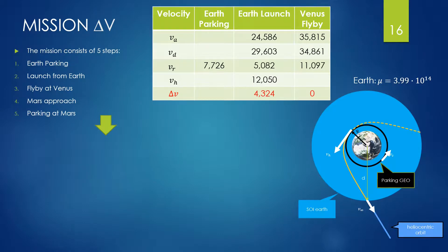Let's complete now the mission. We have five steps: Earth parking, launch to Venus, flyby at Venus, Mars approach, and Mars parking. We have seen till now only step number 3. Now we need to complete the other steps. For the parking circular orbit around the Earth, we assume a quote of 300 kilometers.